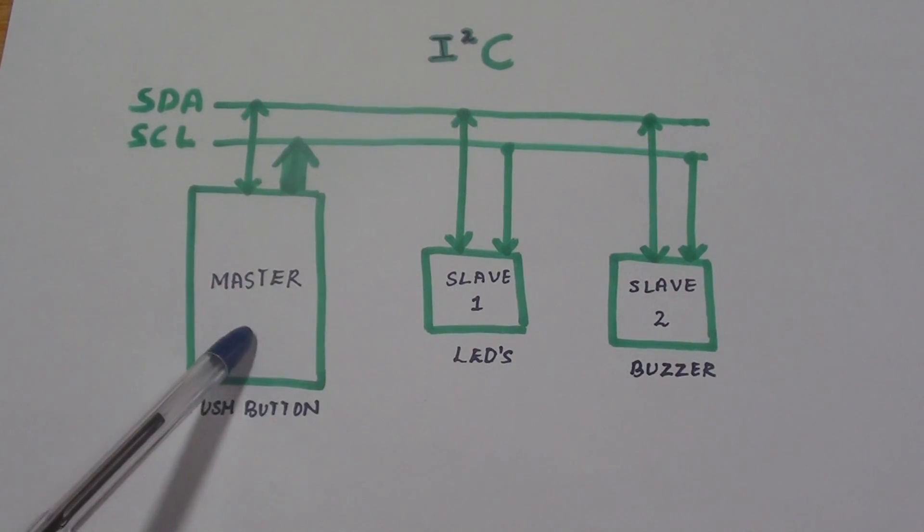When push button is pressed the signal is sent from the master to the two slaves and the slave 1 LED will be blinking and slave 2 the buzzer beeps.